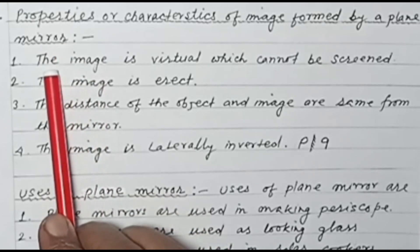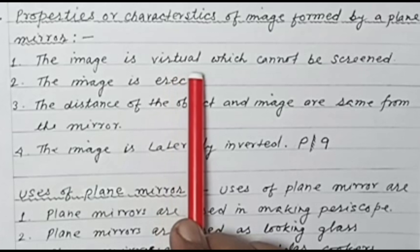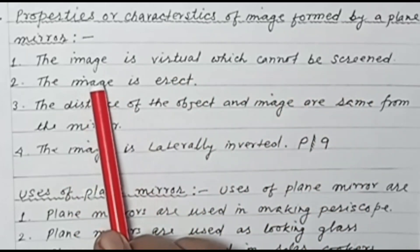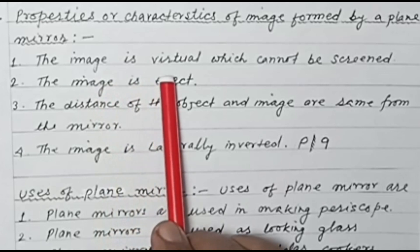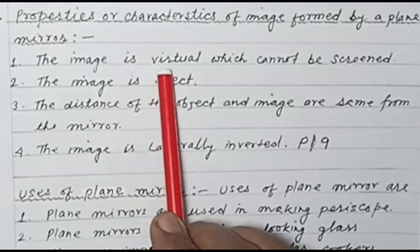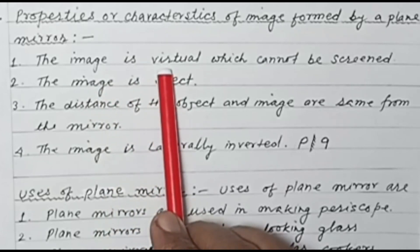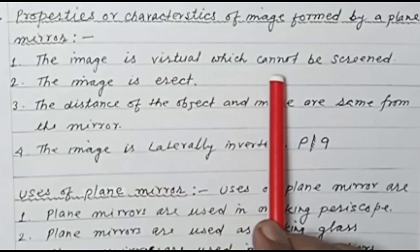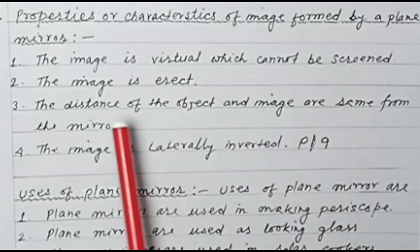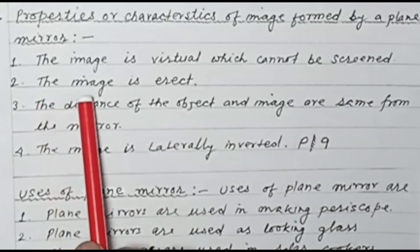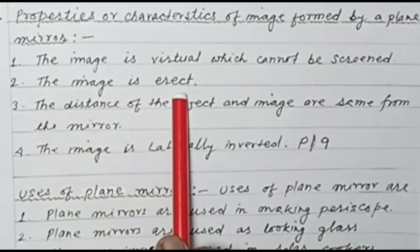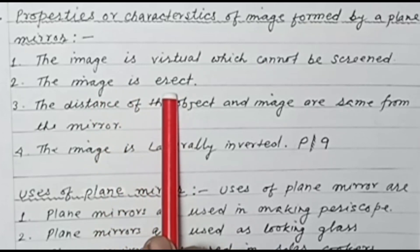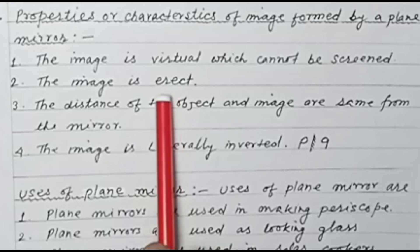Properties and characteristics of image formed by a plane mirror. Number one: the image is virtual, which cannot be screened. Bachon, plane mirror mein jo image banta hai, woh virtual banta hai, jisko hum screen pe nahi dekh sakte. Number two: the image is erect. Jo image banta hai, woh seedha hota hai, erect hota hai.